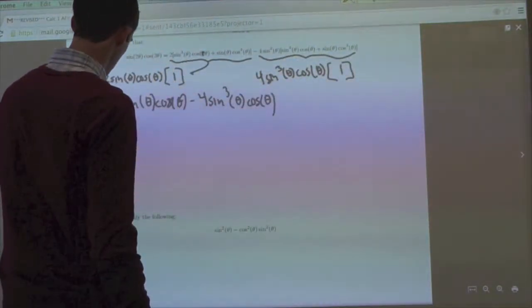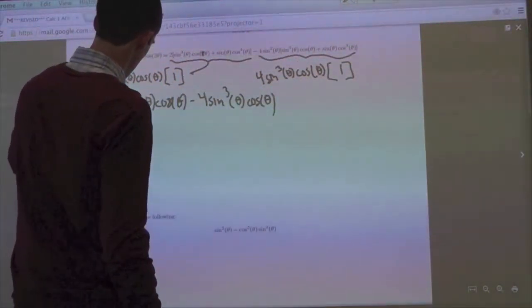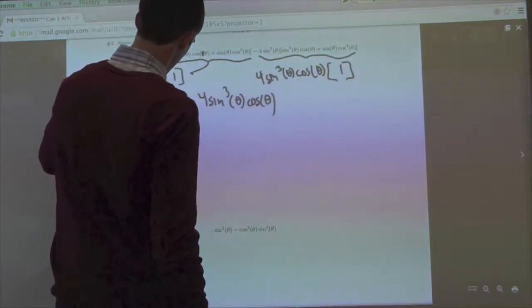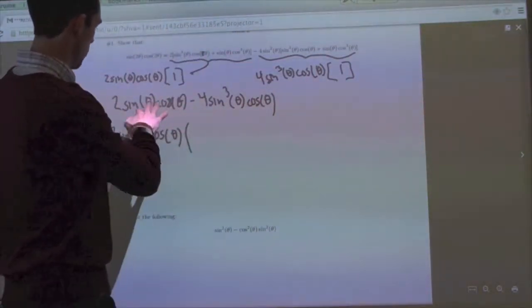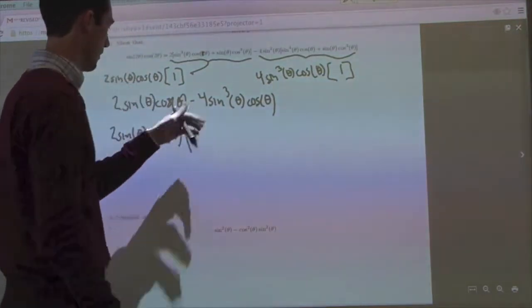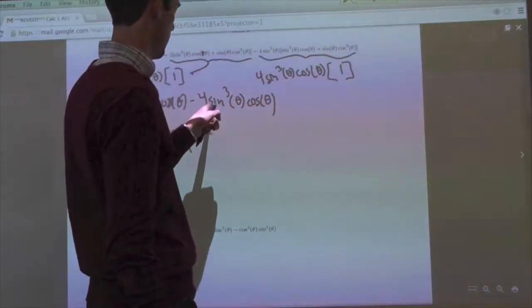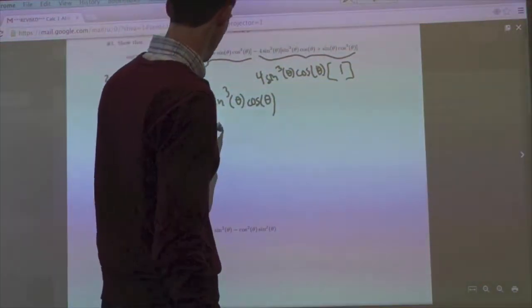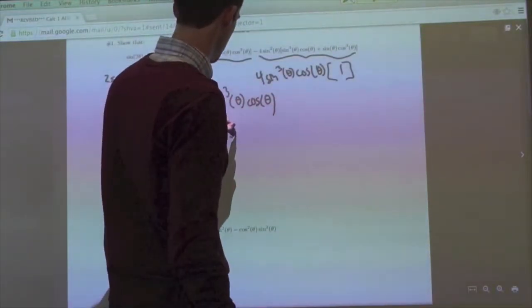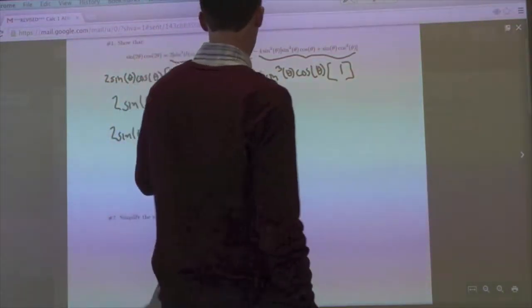So if we do that, we get the two sine theta cosine theta. What's left in here is just a one on this first one, so we pull everything out of there, and then we subtract, the two was pulled out, so all that's left over is two, and a sine squared.